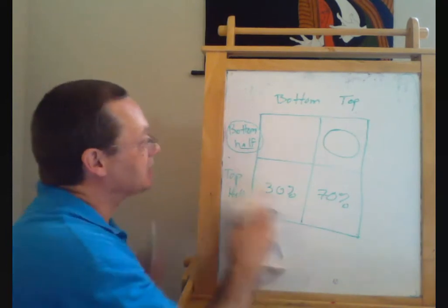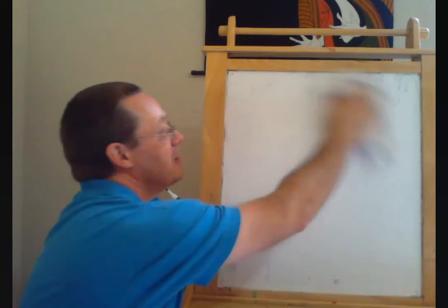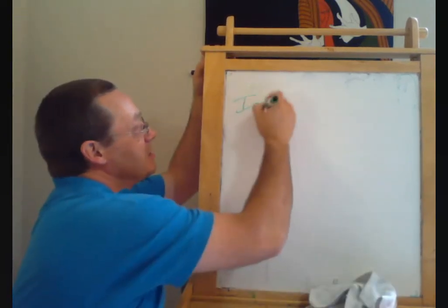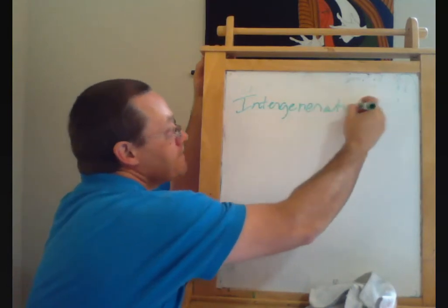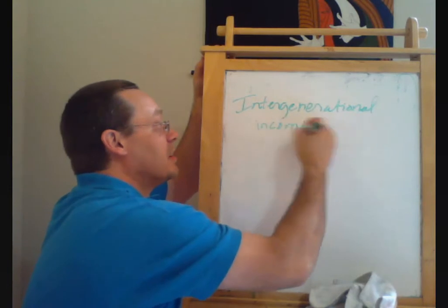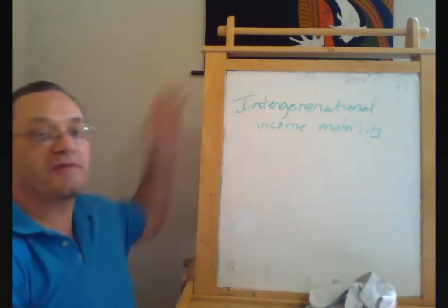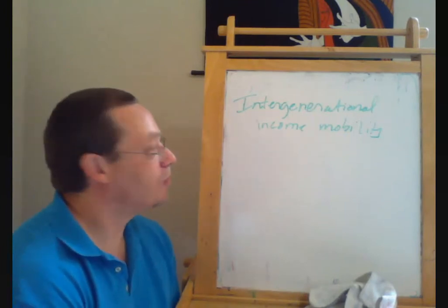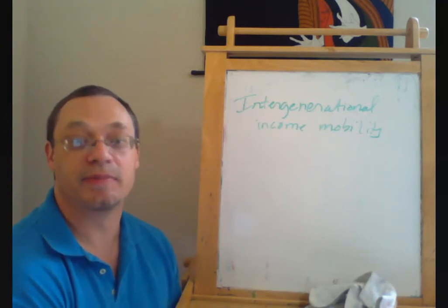The last way, actually, one last thing. This video segment is maybe getting a little bit long, but easier, I think, to put it in here is intergenerational income mobility. So the previous way of looking at income mobility really keeps track, typically, of people's mobility over a 10, maybe 15, maybe 20-year time period.